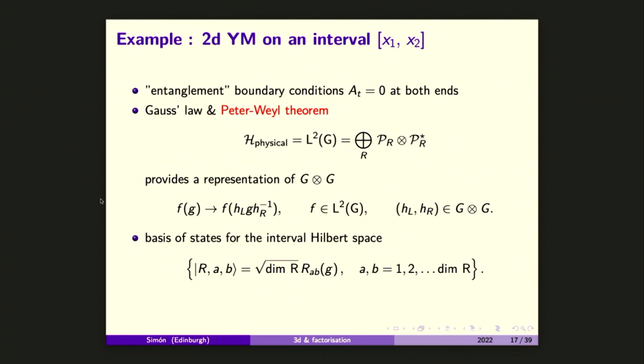Because of this decomposition and these matrix elements, there is some action of the gauge group on both labels A and B. This is going to be important because when we break the interval into two sub-intervals, this is going to generate some extra gauge symmetry that we will have to quotient by. The boundary conditions we put at infinity define some large gauge transformations. And these large gauge transformations should become physical degrees of freedom — you may recall these as edge modes at the boundary.